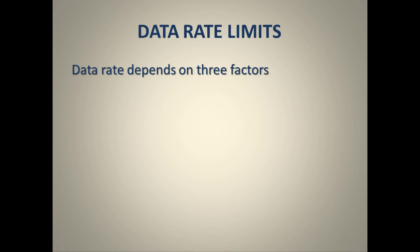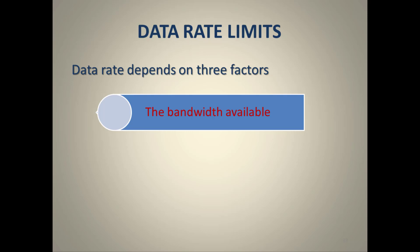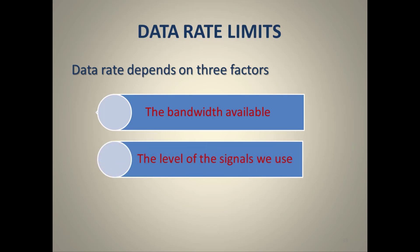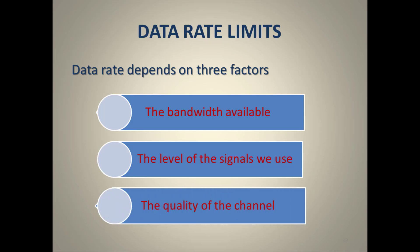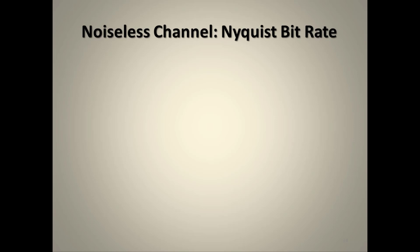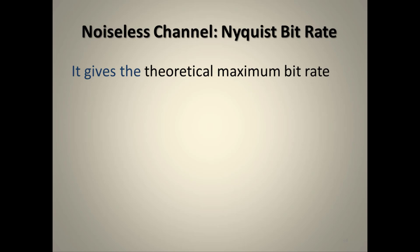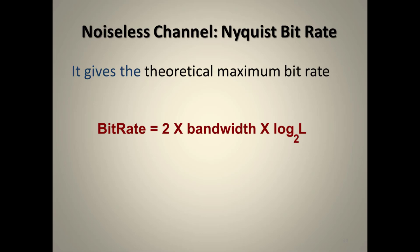Data rate limits describe how fast data can be sent through a channel. It depends on three factors: available bandwidth (more bandwidth allows more data), the number of signal levels (more levels allow more data), and channel quality (noisy vs noiseless). For a noiseless channel, the Nyquist bit rate formula gives the maximum bit rate: Bitrate = 2 × Bandwidth × log₂(L), where L is the number of signal levels.